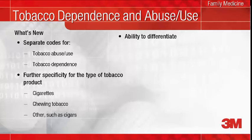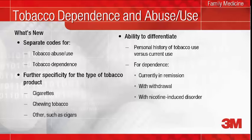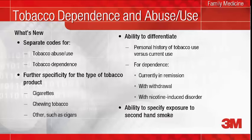Your documentation should differentiate between current abuse and dependence versus a person who no longer uses tobacco. Starting in 2002, the number of former smokers has exceeded the number of current smokers. For tobacco dependence, ICD-10 provides the ability to report remission and withdrawal. Examples of nicotine withdrawal symptoms include irritability, anxiety, difficulty concentrating, and increased appetite. ICD-10 also provides the ability to show a cause and effect relationship between tobacco dependence and nicotine-induced disorders when documented. Finally, your notes for a patient's exposure to secondhand smoke can be converted to an ICD-10 code that says exactly that.